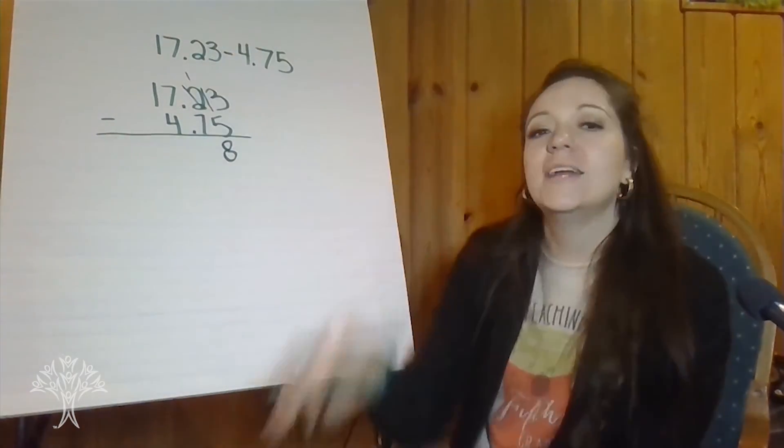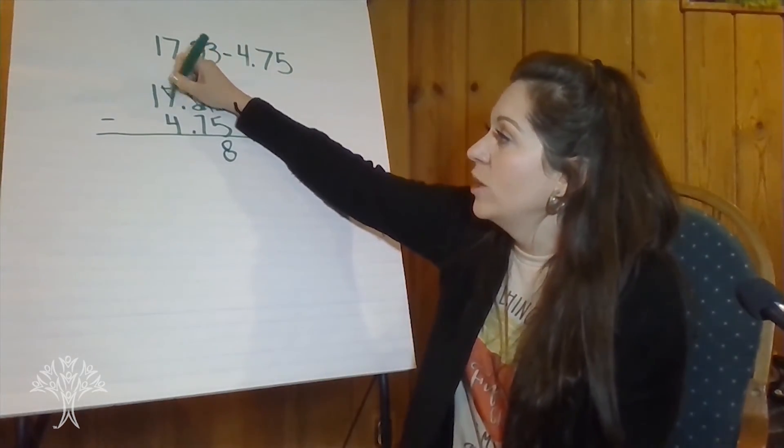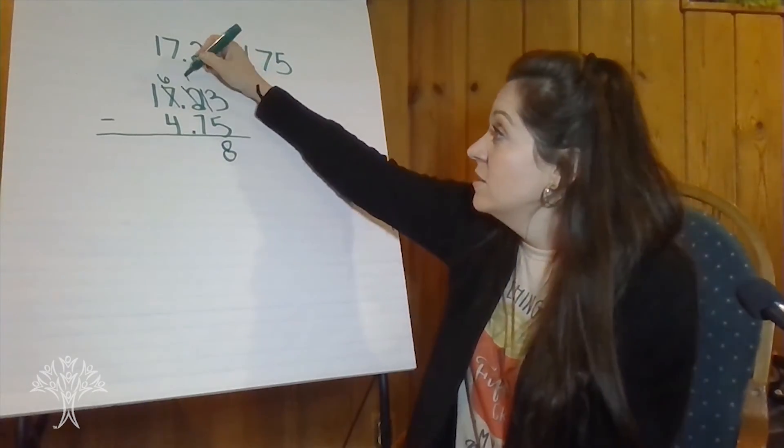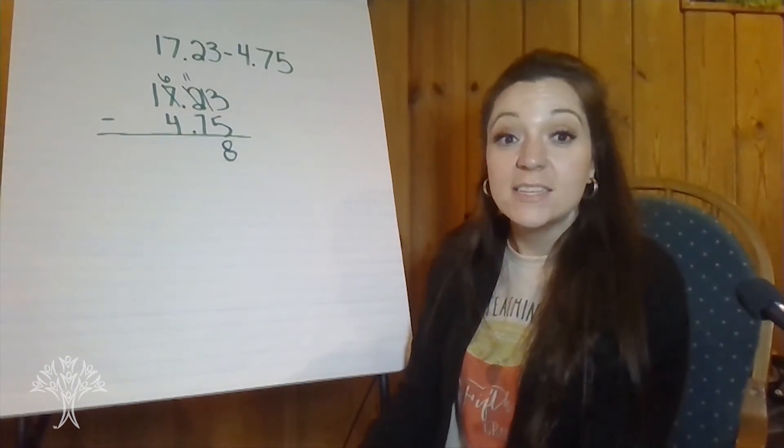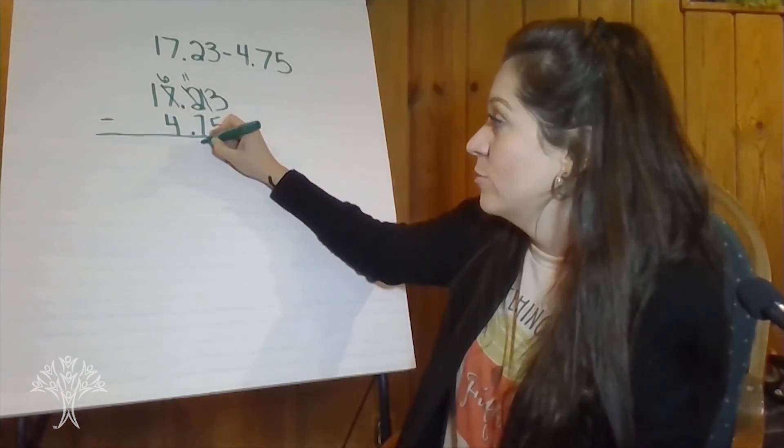One tenth take away seven tenths. Can't do it yet. Let's regroup from the ones place. Take a one and break it into ten tenths. So now I have eleven tenths take away seven tenths. Can I do that? Of course. Now I have four tenths.